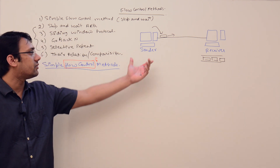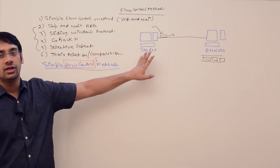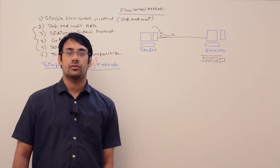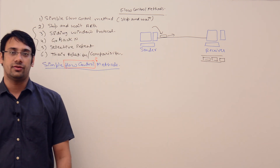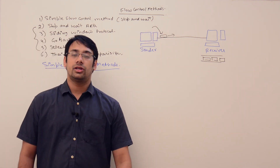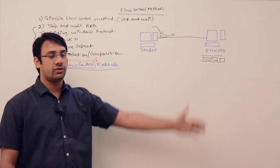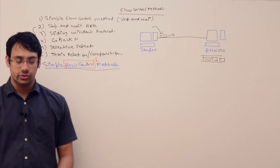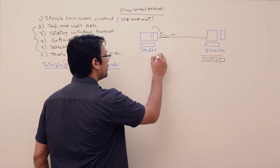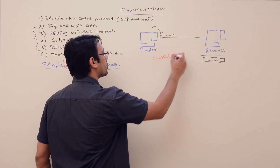Flow control determines the pace of the data flow. This complete mechanism is called a closed loop protocol, meaning the sender should always follow the receiver's capacity.